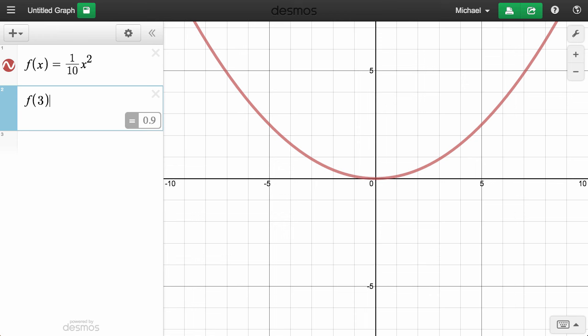For example, if we type f(3), Desmos will evaluate the function at x equals 3 and display the result.